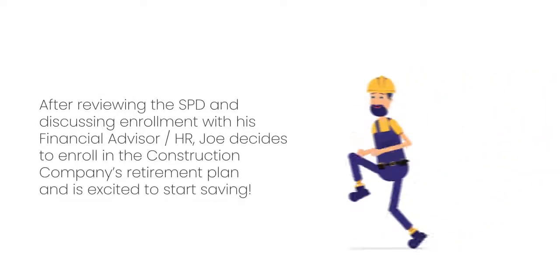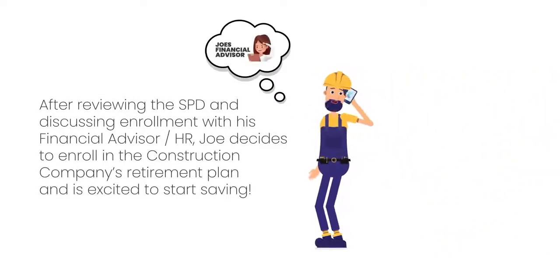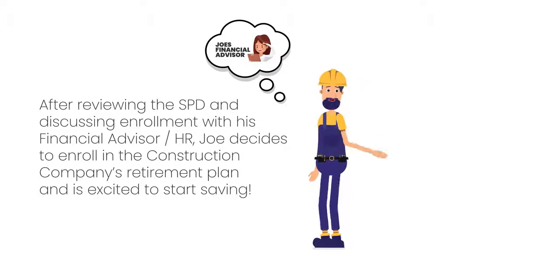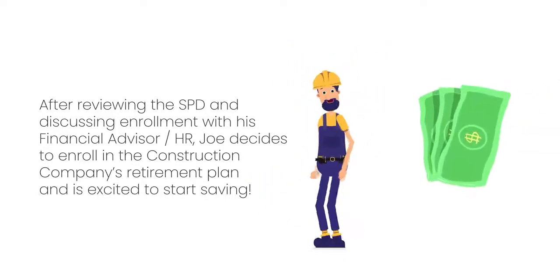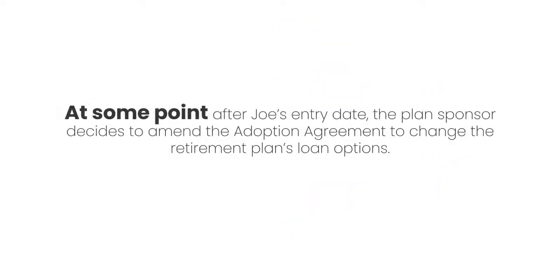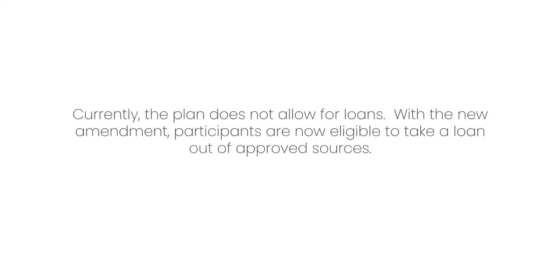After reviewing the SPD and discussing enrollment with his financial advisor and HR department, Joe decides to enroll in the construction company's retirement plan and is excited to start saving. At some point after Joe's entry date, the plan sponsor decides to amend the adoption agreement to change the retirement plan's loan options. Currently, the plan does not allow for loans, but with the new amendment, participants are now eligible to take a loan out of approved sources.